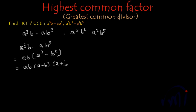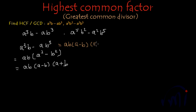a square minus b square is (a minus b) multiplied by (a plus b). So the factors of a³b minus ab³ will be ab multiplied by (a minus b) multiplied by (a plus b).